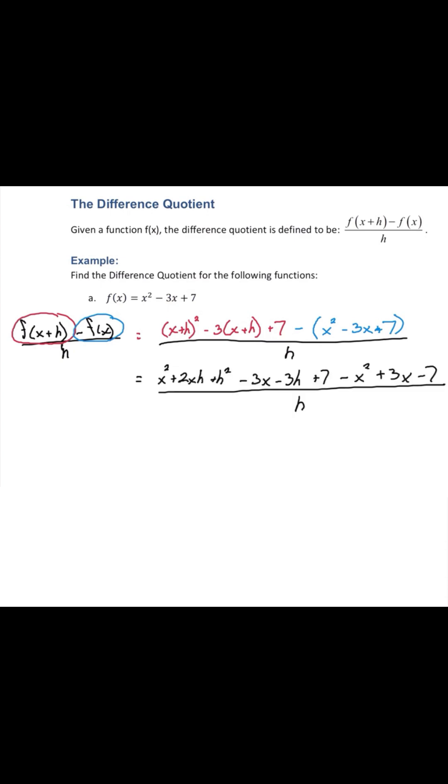Now we'll go through and see if any like terms combine. x squared and negative x squared add to zero. Negative three x and plus three x adds to zero. Seven and minus seven add to zero. So we're left with two xh plus h squared minus three h over h.